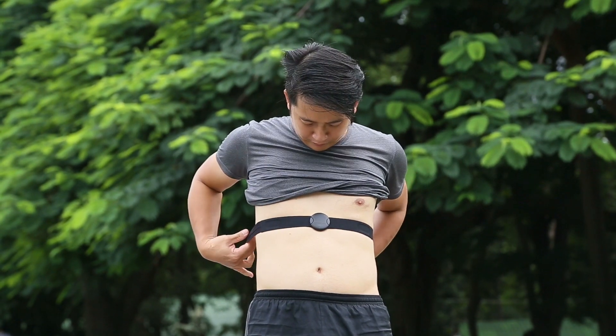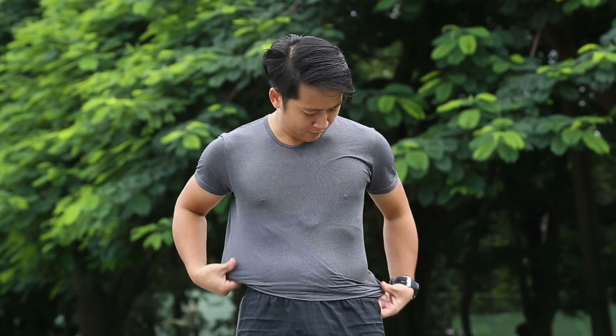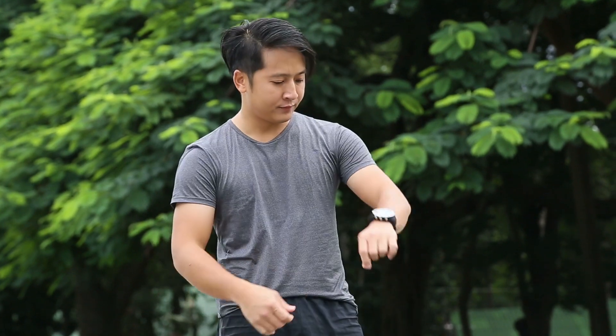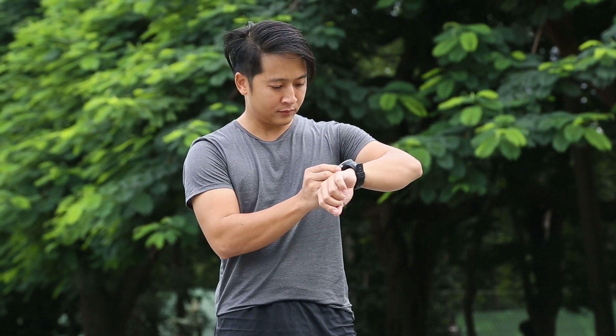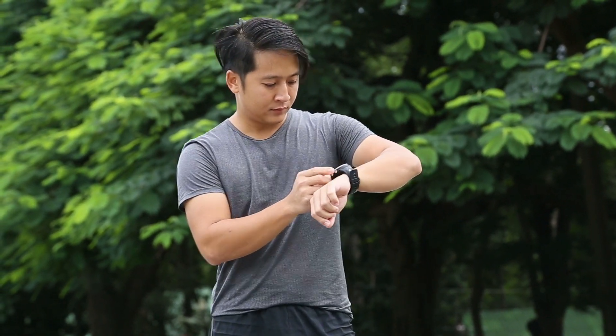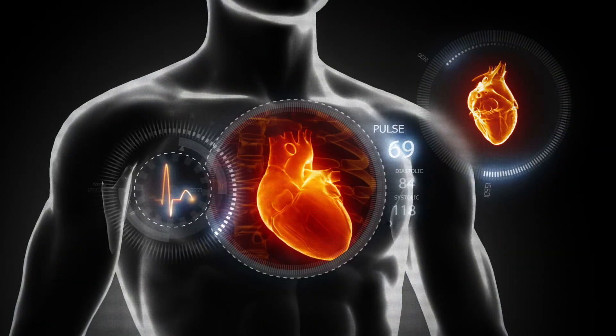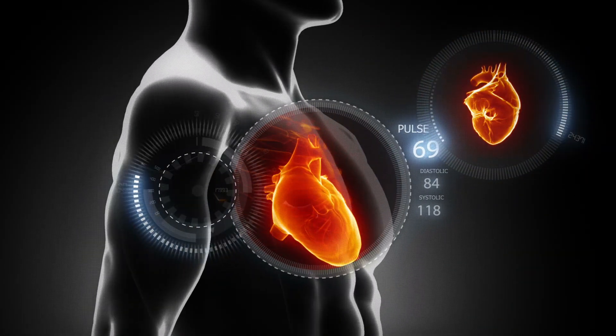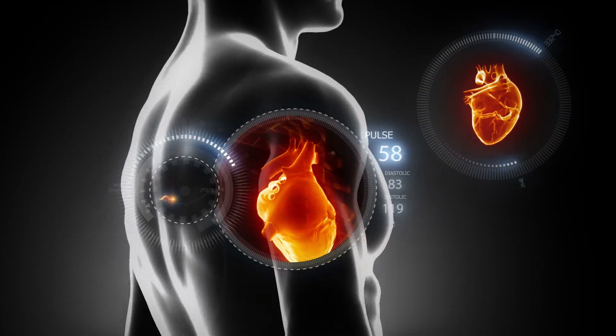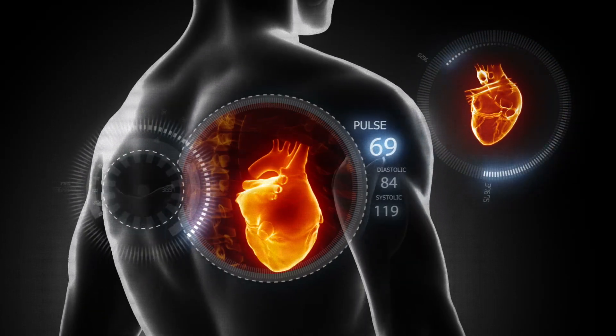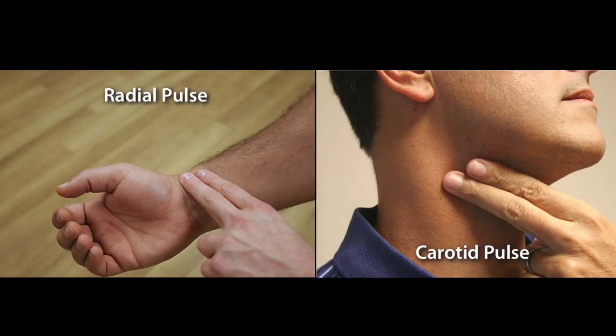Interestingly, blood pressure ties in with assessing a client's pulse, as pressure exerted against the arterial wall at pulse assessment locations during each heartbeat is what we feel when we take a resting or exercise measurement. Large arteries close to the skin can be palpated at the head, neck, arm, and leg.